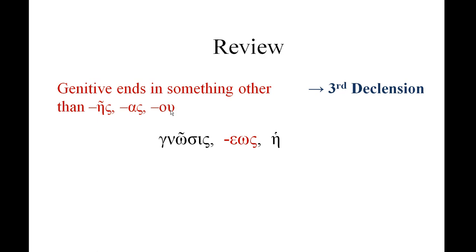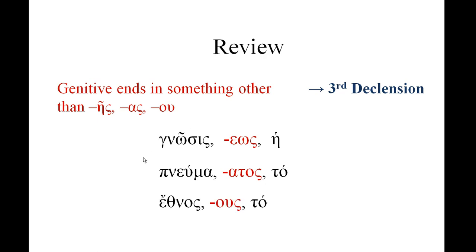Here are some examples. We have 'gnosis' — its genitive is 'eos' (epsilon-omega-sigma), and it's feminine as shown by the definite article 'he'. Another example is 'pneuma,' meaning wind or spirit, which has a genitive ending of '-atos,' so 'pneumatos' is its genitive — this is a neuter, as the definite article 'to' tells us. One more example is 'ethnos,' which has a genitive ending of '-ous' (omicron-upsilon-sigma) and is also neuter. So in the genitive, anything other than an ending of eta-sigma, alpha-sigma, or omicron-upsilon is likely third declension.